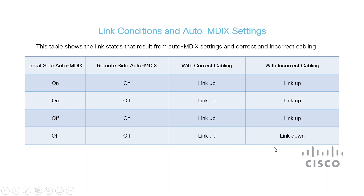When Auto MDIX is enabled on either the local or the remote site, the link will remain up even if the cabling is not correct. So what happens if Auto MDIX is disabled at both the local and remote site? The link will remain up with correct cabling and down with incorrect cabling.